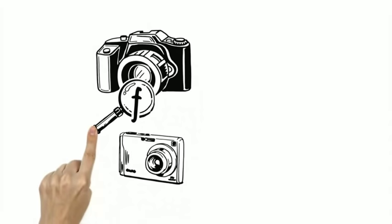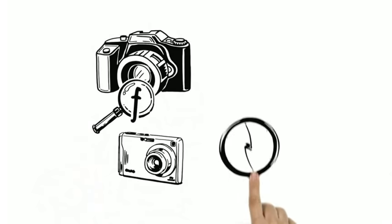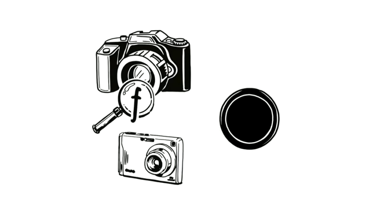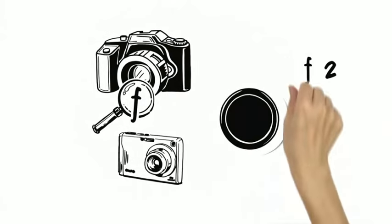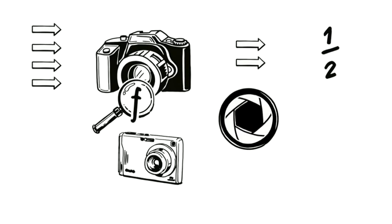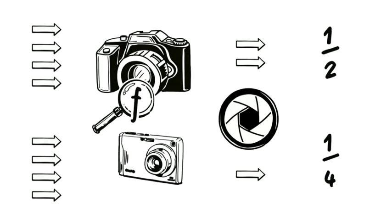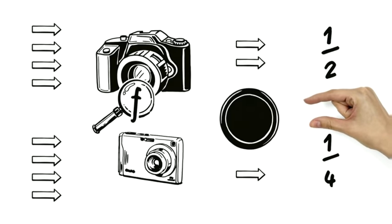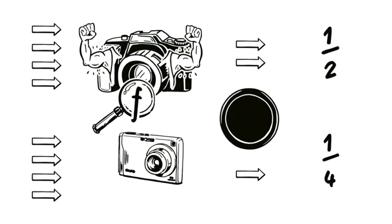The F number, or focal ratio, specifies up to how far the curtains can be opened. At F2, only halfway. At F4, only a quarter of the way. So, the lower the number, the more light can pass through a particular lens.